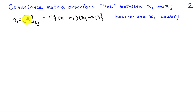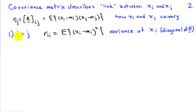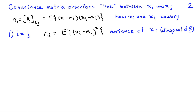Looking at matrix R, the ij element is the expected value of (xi minus mi) times (xj minus mj), telling us on average how xi and xj vary together — or covary — about the mean. Consider first the case where i equals j, so r sub ii is the i-th diagonal element of R. In this case we have the expected value of (xi minus mi) squared, which is just the variance of xi. So along the diagonal of matrix R, we have the variance of the corresponding random variables.